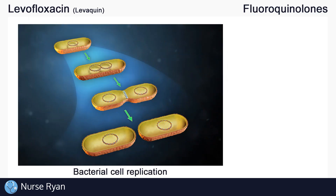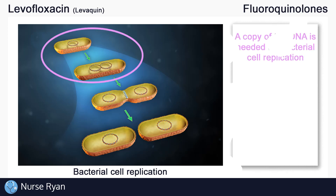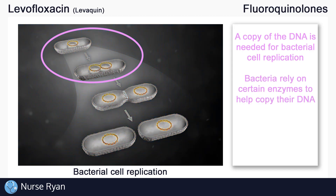In order to survive and thrive in a host like you or me, bacteria need to be able to replicate themselves. Before a bacteria replicates or divides, they first need to make a copy of their DNA, which would then be passed to the replicated cell. So in order to copy their DNA, bacteria rely on certain enzymes to help get the job done.